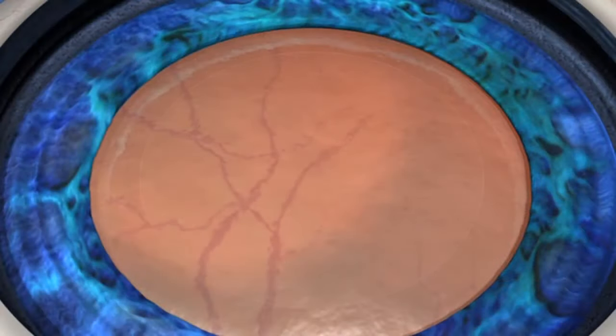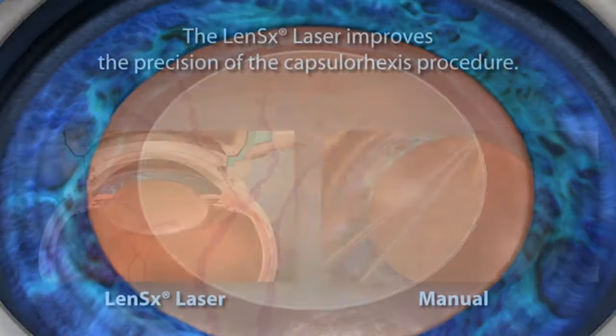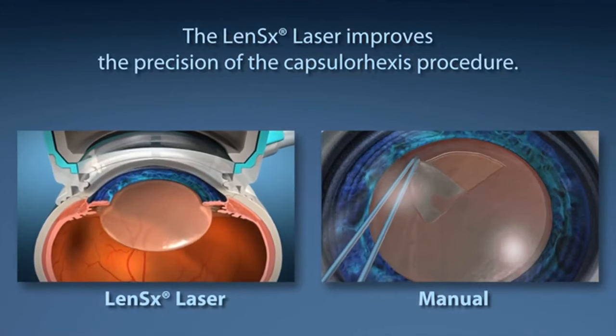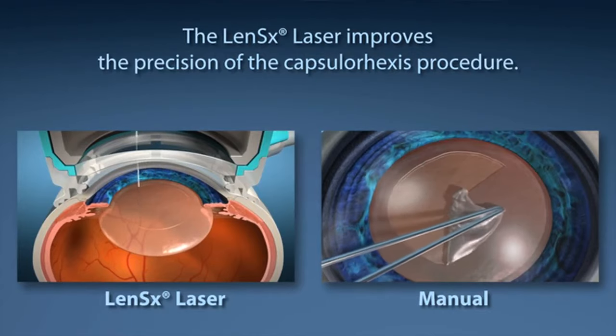Capsular access is the medical term used to describe the removal of the outer layer of the lens in order to allow the surgeon access to removing the cataract. In standard cataract surgery, this step is performed by the surgeon manually creating a circular opening with a hand-held instrument. The LensX laser offers your surgeon laser precision to create the circular opening.